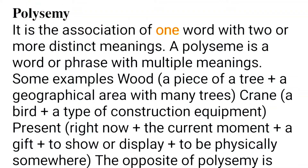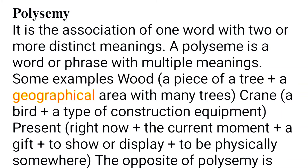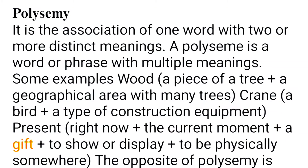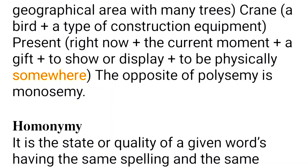Polysemy: it is the association of one word with two or more distinct meanings. A polyseme is a word or phrase with multiple meanings. For example, 'wood' can mean a piece of a tree or a geographical area with many trees. 'Crane' can mean a bird or a type of construction equipment. 'Present' can mean right now, the current moment, a gift, to show or display, or to be physically somewhere. The opposite of polysemy is monosemy.